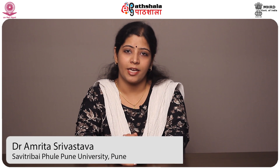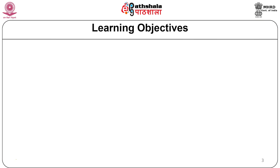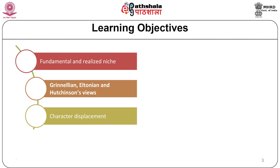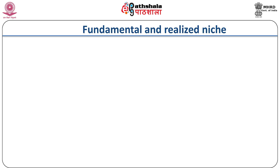Hello everyone, this is the second module of habitat and niche. In this module we are going to emphasize more upon the niche. To recall, habitat is the place wherein organisms live, whereas niche is the role a species plays in the ecosystem. The learning objectives of this module are fundamental and realized niche, Grinnellian, Eltonian, and Hutchinson's views to understand the concept of niche, character displacement, geographical overlap and non-overlap concepts.